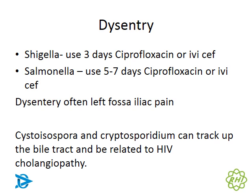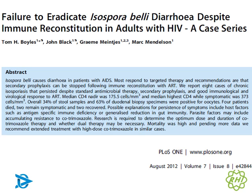Both Cystoisospora and Cryptosporidium can track up the biliary tract and be related to HIV cholangiopathy — the organisms may not necessarily be found in stool cultures. An article from 2012 discussed eight patients with recurrent isospora: although most respond to cotrimoxazole, some patients have recurrence even on ARVs with recovering CD4 counts. Referral is useful to identify other contributing factors.